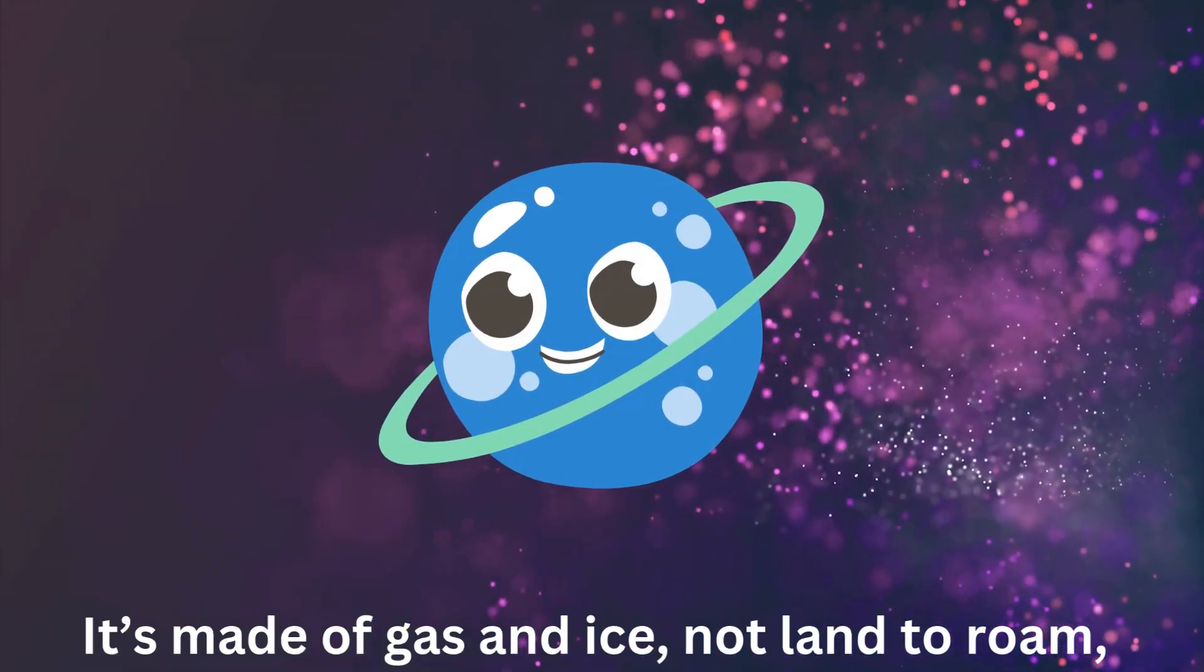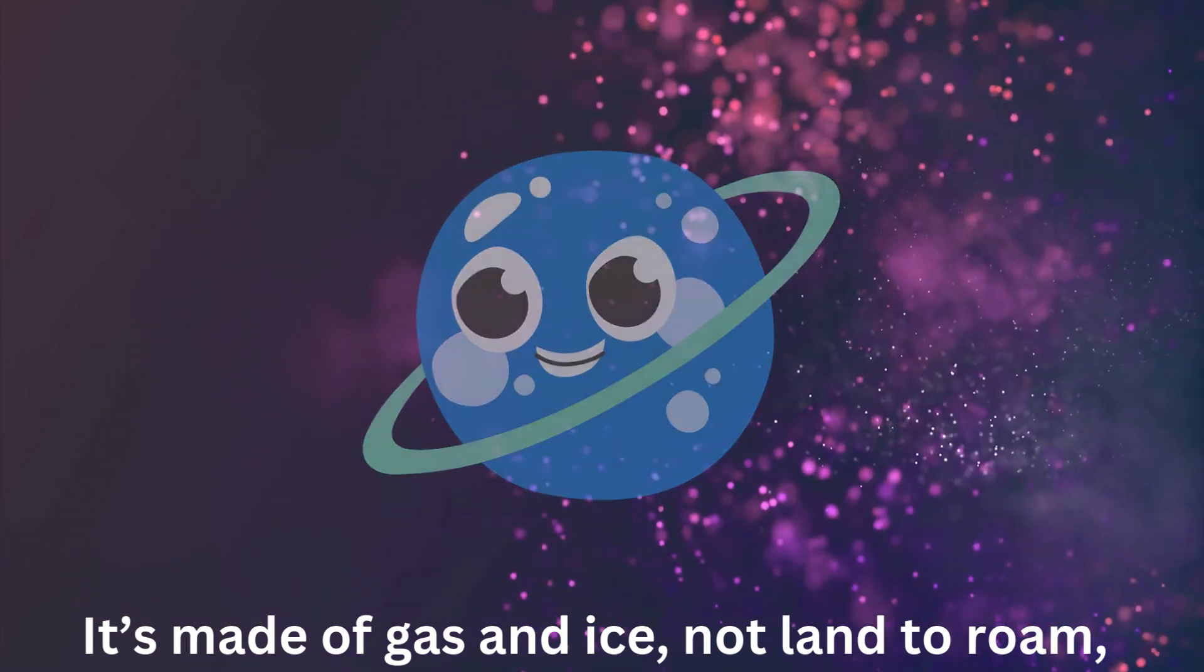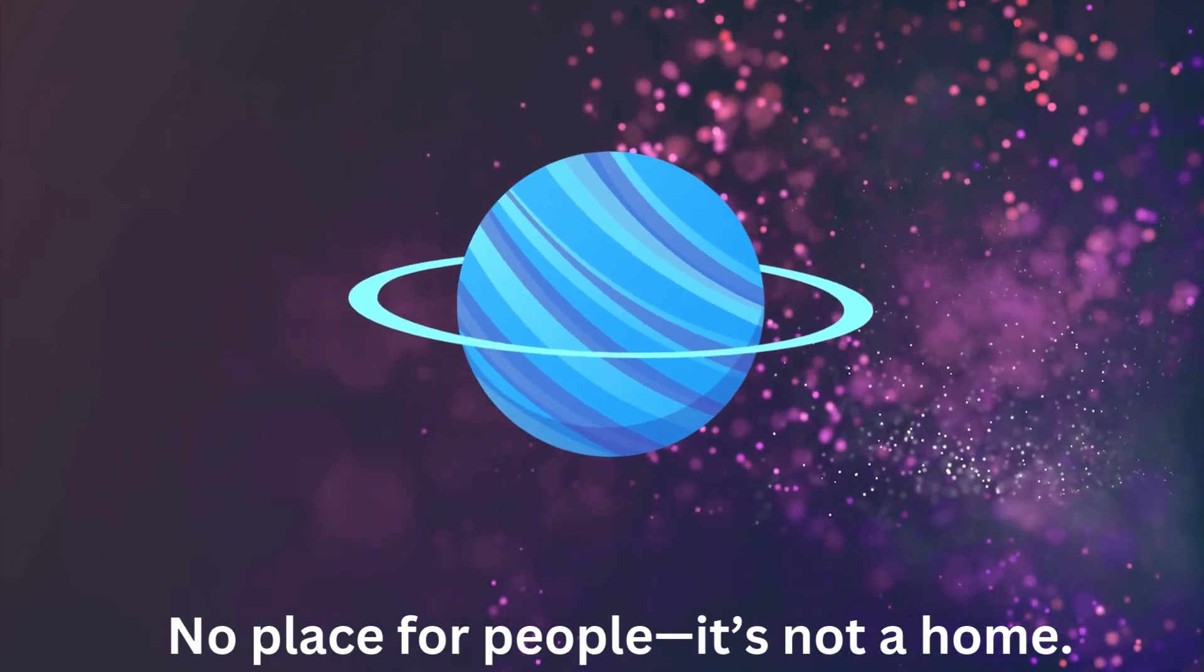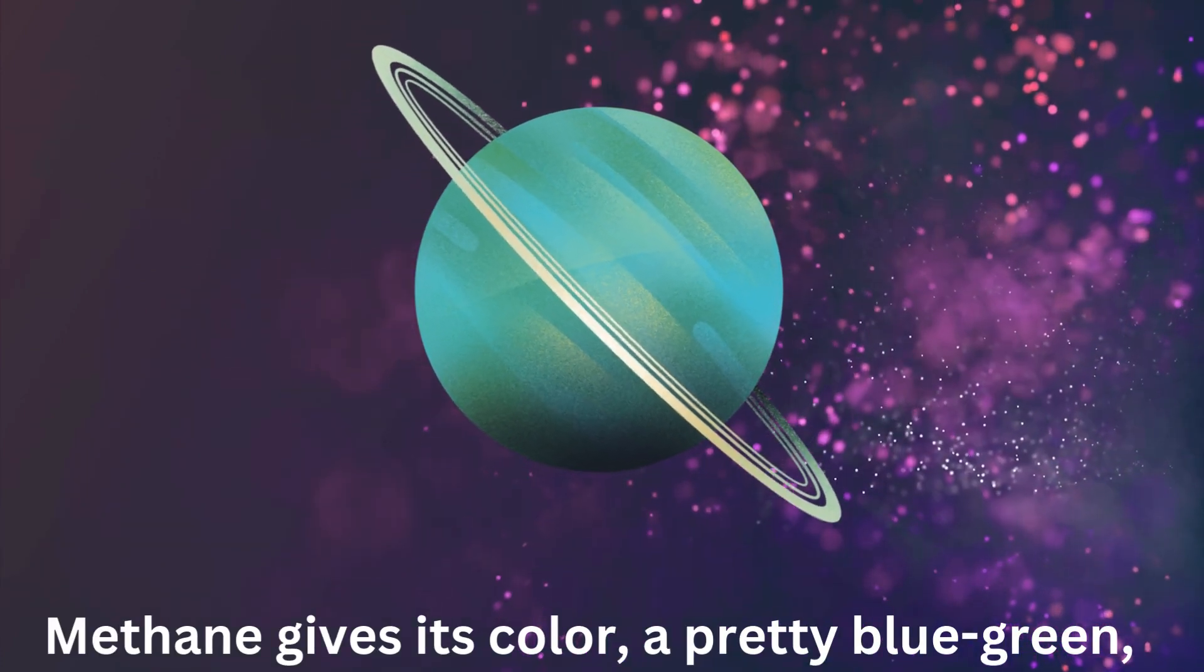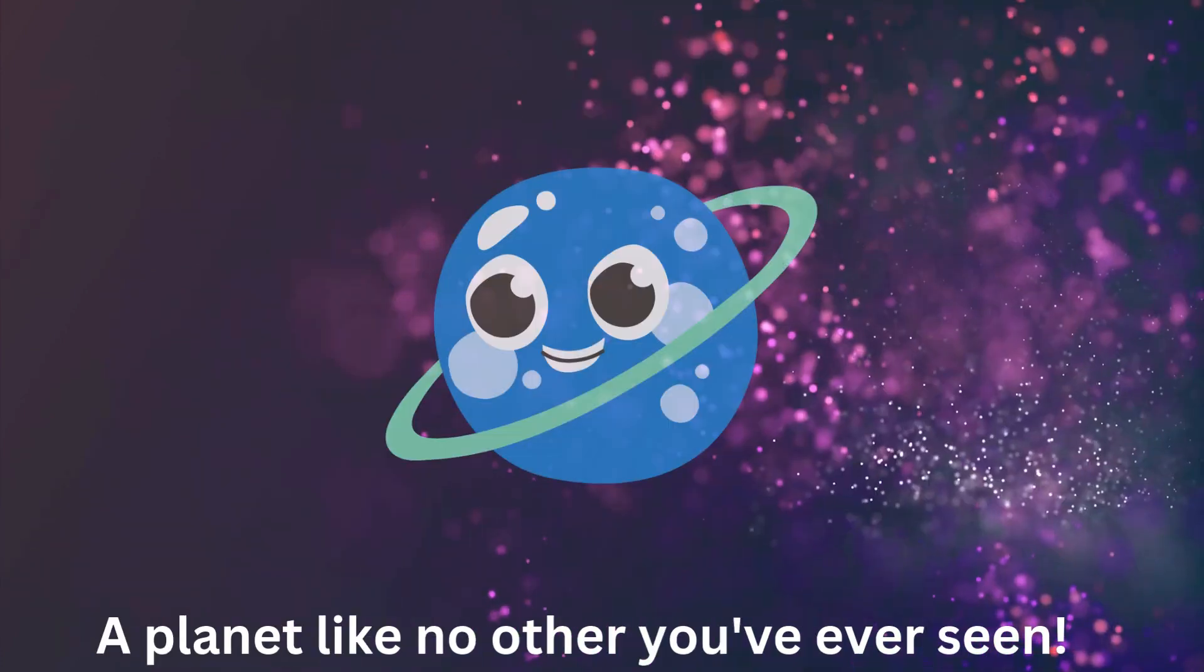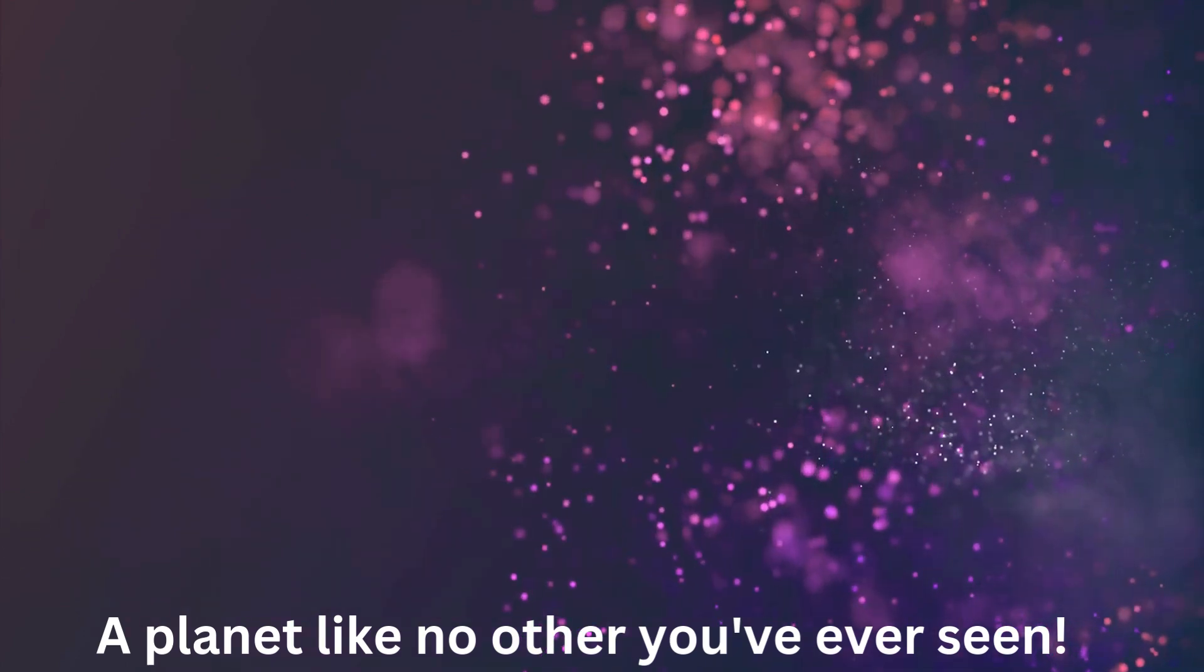It's made of gas and ice, not land to roam. No place for people, it's not a home. Methane gives its color, a pretty blue-green—a planet like no other you've ever seen.